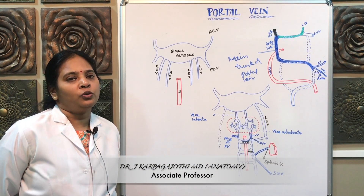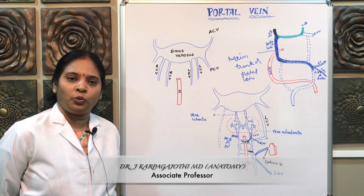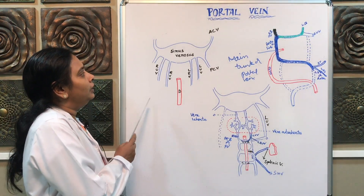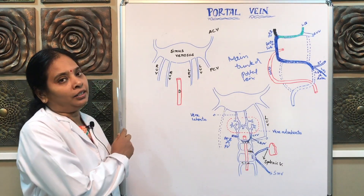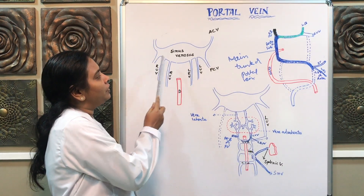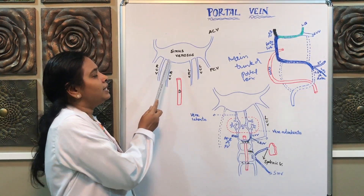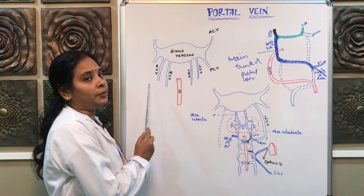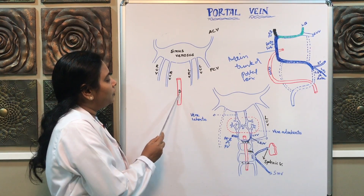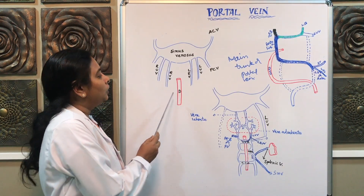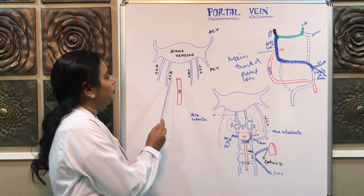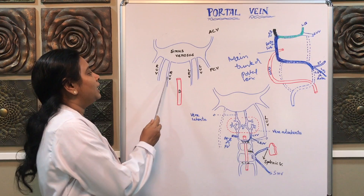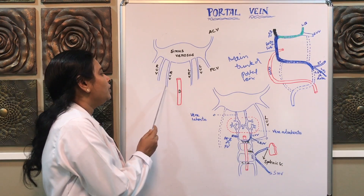Welcome students. We are going to see about the development of the portal vein. To understand the development of the portal vein, you have to know about some features of the development of the heart. In the heart tube, the lower portion is otherwise called as sinus venosus, which is the venous end of the heart tube. It receives three sets of veins. In the middle portion, there is a structure called the gut tube. Around the gut tube, on either side, there are two sets of veins called vitelline veins.